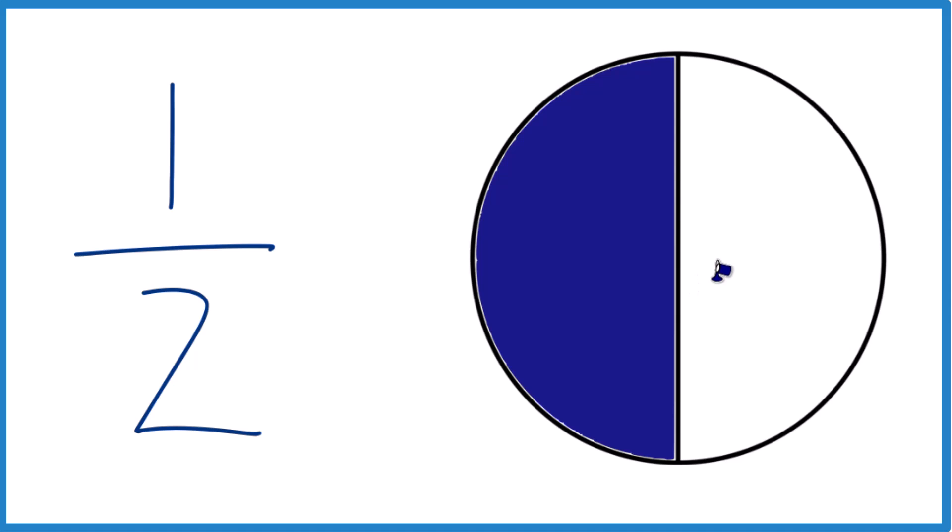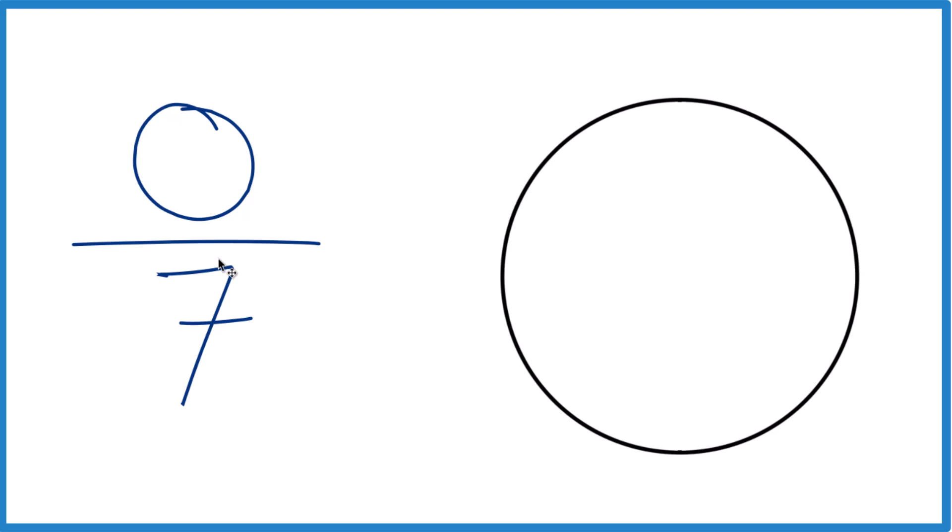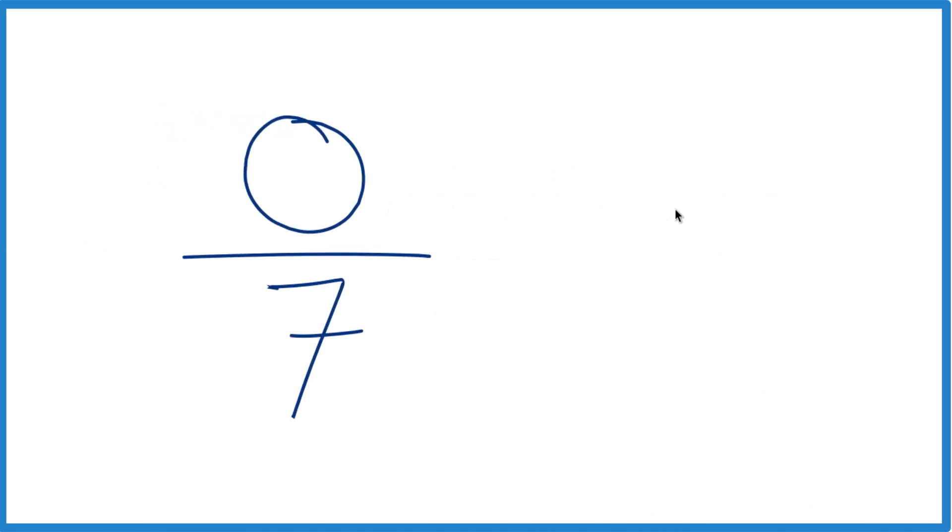But what does it mean to have 0 divided by 7, or 0 divided by any number? So what we're saying is we have 0 things, and we're going to divide it in 7 pieces. So if we have 0 things, we don't have anything.